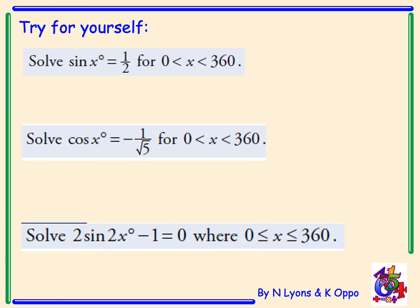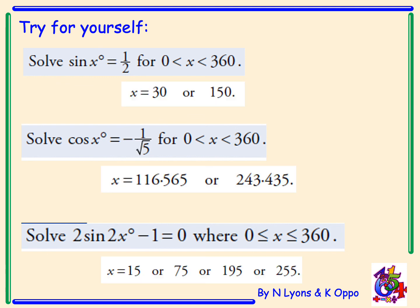Now try these examples for yourself — please pause the video. The solutions are: for the first trig equation x is 30 or 150 degrees; for the second, x is 116.565 or 243.435 degrees; and for the third equation, x is 15, 75, 195, or 255 degrees.